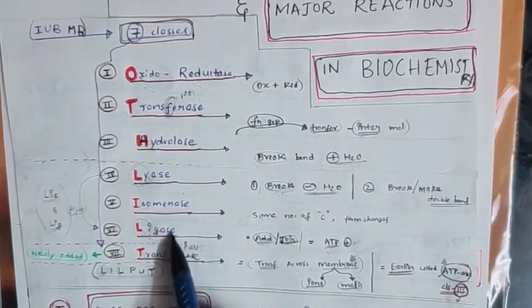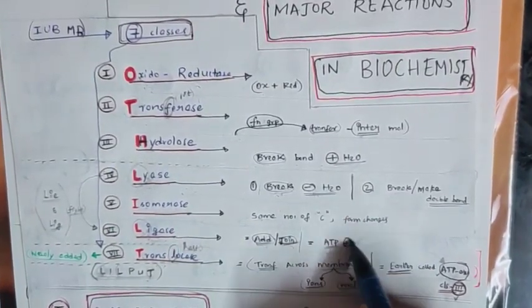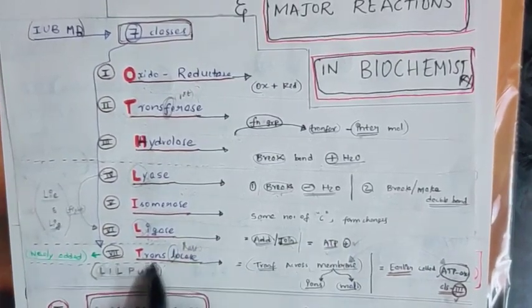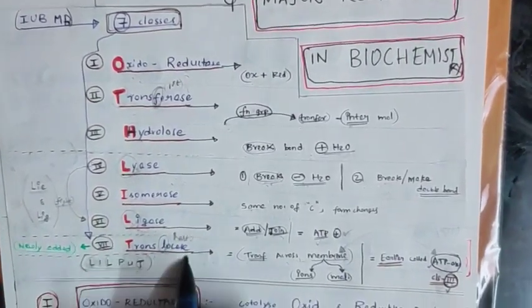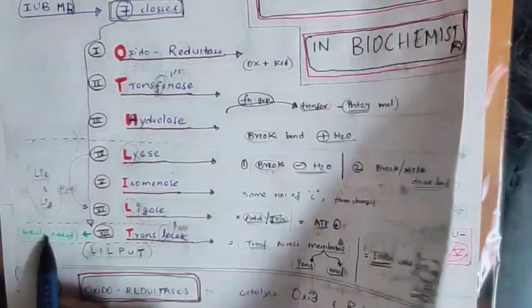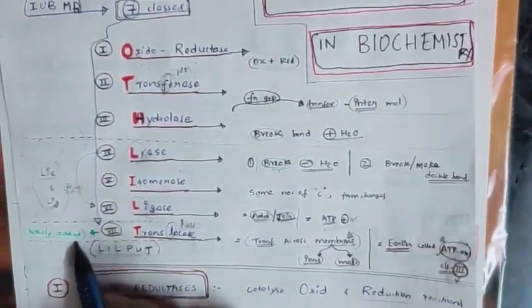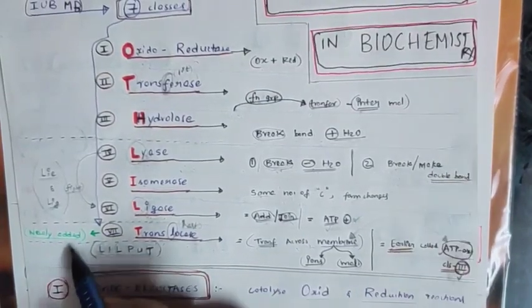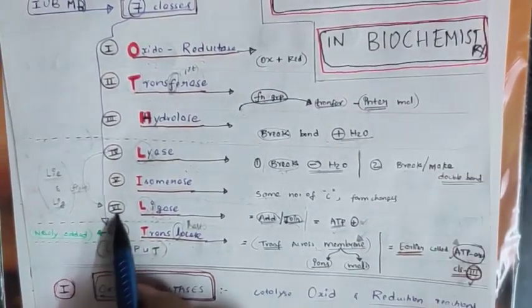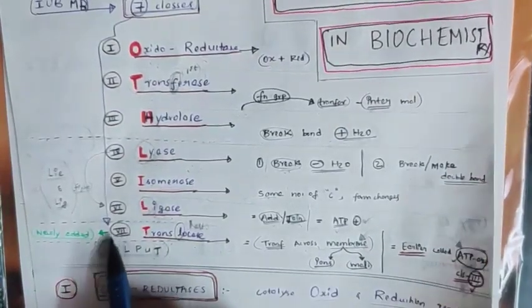This is a must, you should remember this. ATP Translocase: Translocase is a newly added class in August 2018. In old editions, if anyone has old edition of textbook, you can add this class. They have given only six classes, but now there are total seven classes.